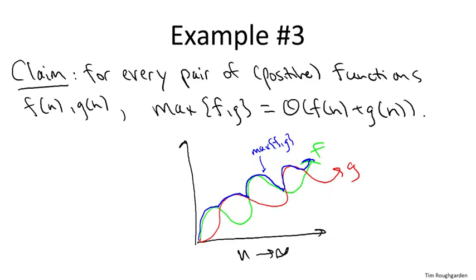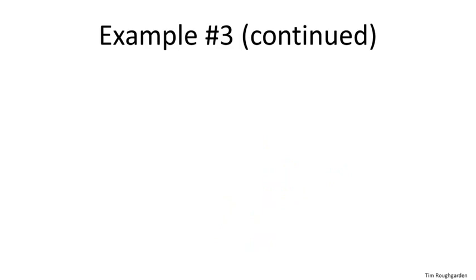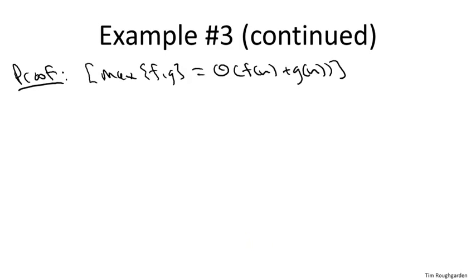So let's now turn to the proof of this claim, that the point wise maximum of two functions is theta of the sum of the two functions. So let's recall what theta means formally. What it means is that the function on the left can be sandwiched between constant multiples of the function on the right.